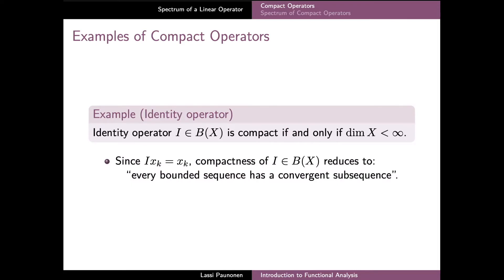The previous examples are very typical and important examples of compact operators. As an example of an operator which is not compact, we can note that the identity operator on an infinite dimensional space is never compact. Indeed, for the identity operator compactness reduces to the condition that every bounded sequence has a convergent subsequence, which holds precisely on finite dimensional vector spaces.